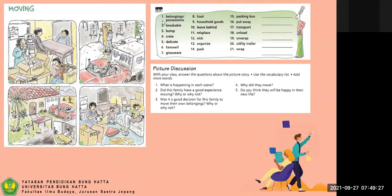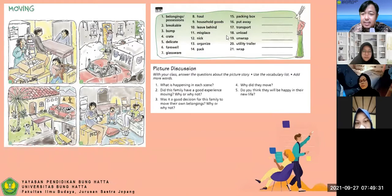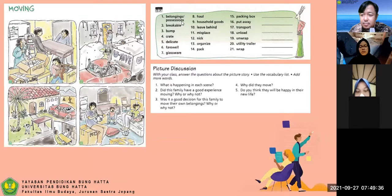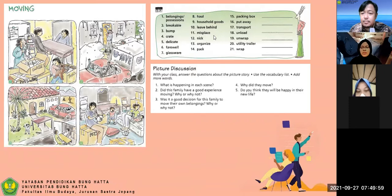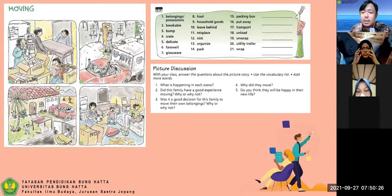Please read, Andre. Number one: belongings or possessions. Two: breakable. Three: bump. Four: crate. Five: delicate. Six: farewell. Seven: glassware. Eight: hole. Nine: household goods. Ten: left behind. Eleven: misplaced. Twelve: nick. Thirteen: organize. Fourteen: pack. Fifteen: packing box. Sixteen: put away. Seventeen: transport. Eighteen: unload. Nineteen: unwrap. Twenty: utility trailer. Twenty-one: wrap. Thank you Andre — this list links to the idea of moving.